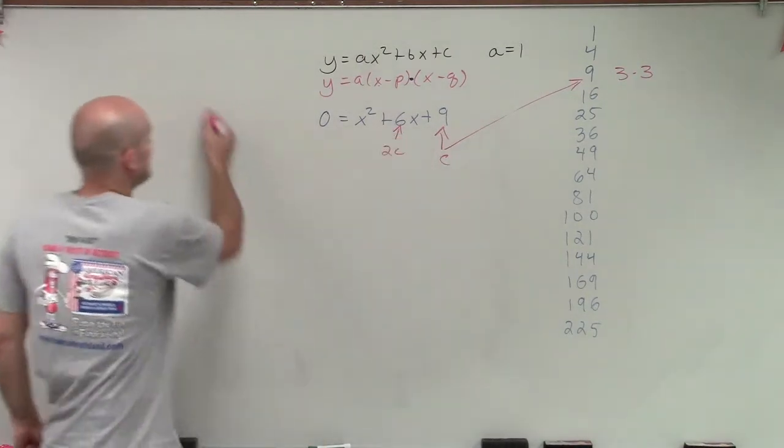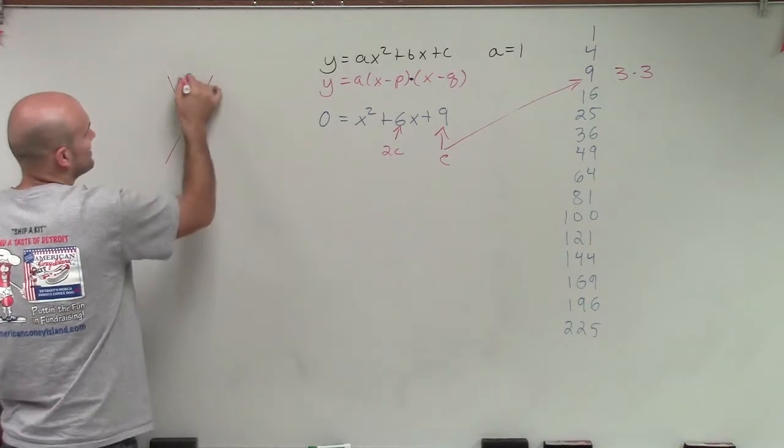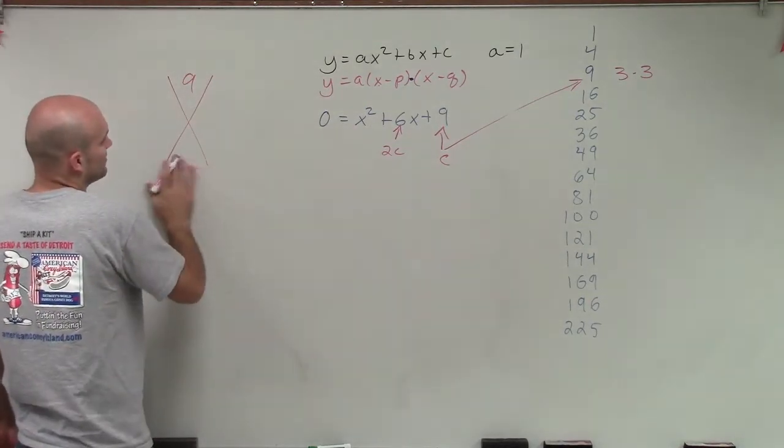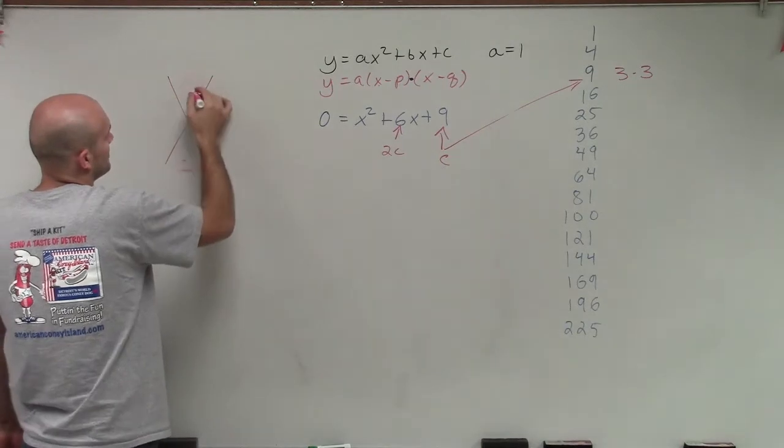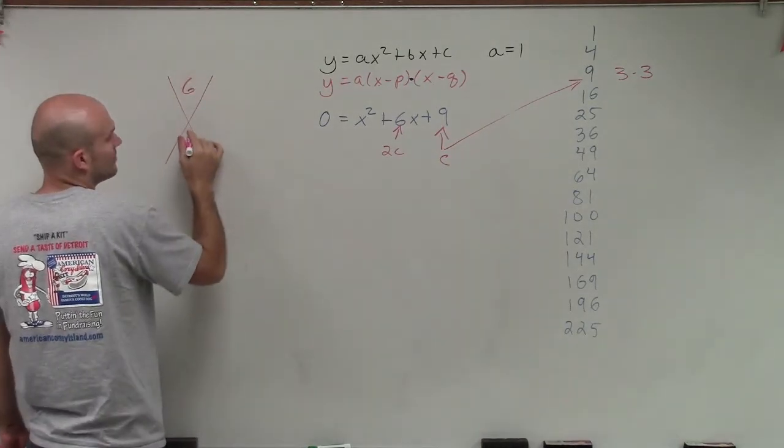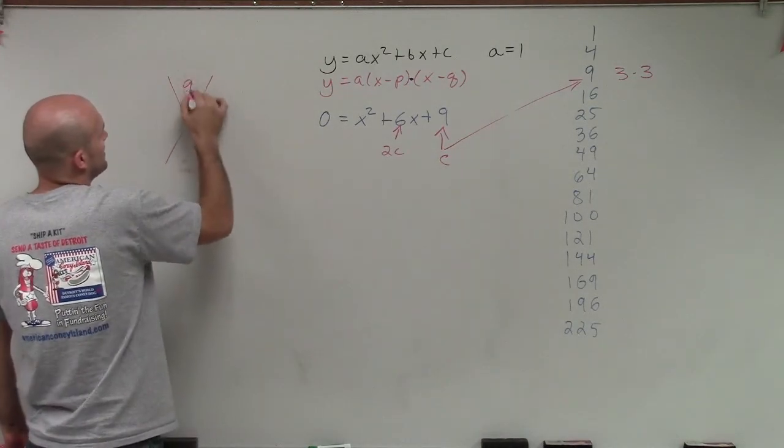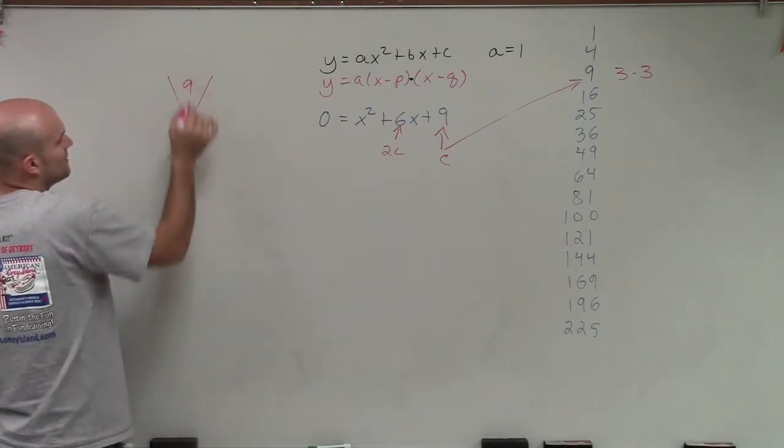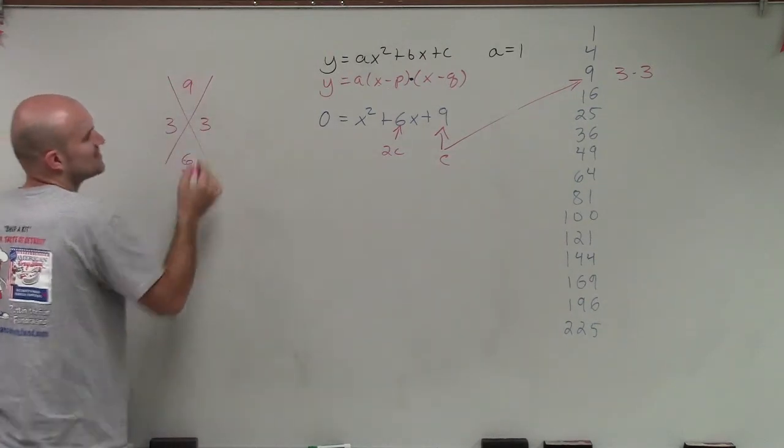So if I was going to use maybe like my box or my diamond method, I'd say 9—I'm sorry, wrong way. I'd say 6. What was I doing? No, I was doing multiplied. OK. So 9 and 6. What two numbers multiply to give you 9, add to give you 6? Well then, obviously, yes, those two numbers are 3.